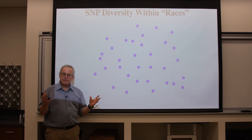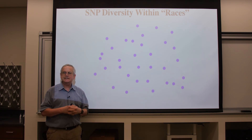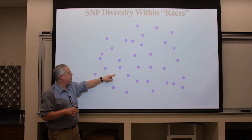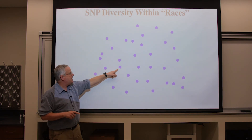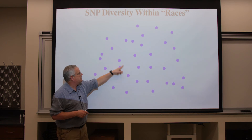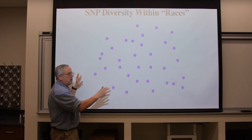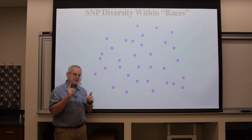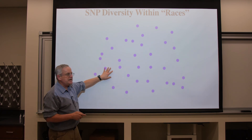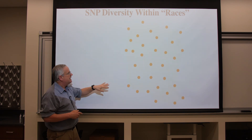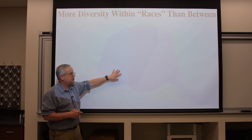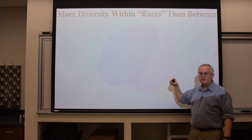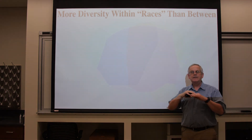Biologists have known since at least 1975 that these different dots — representing the different SNP combinations of a person — show that the spread of SNP combinations within one race is greater than the differences between races. There's more diversity within a single race than there is between different races. If you draw out the diversity in one race, then another, then a third, and overlap them, they overlap so much that there's actually less difference between the races than there is diversity within any one race.